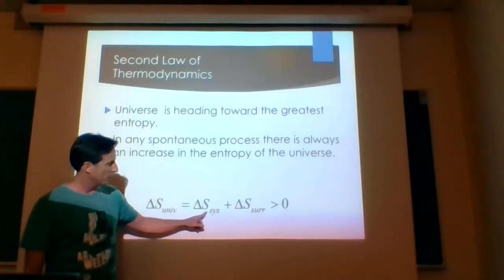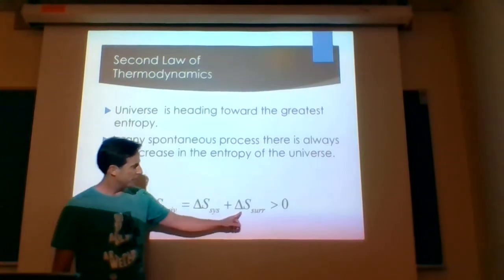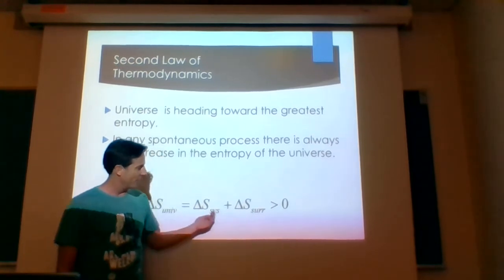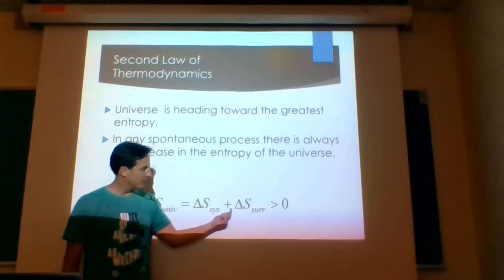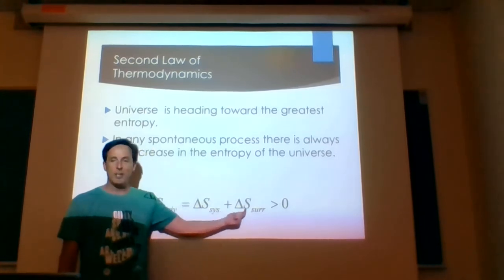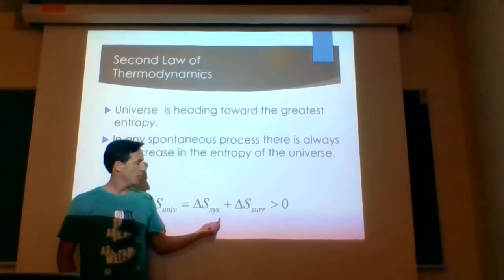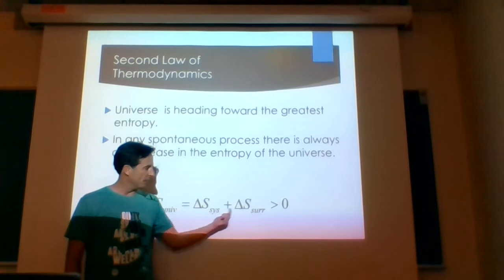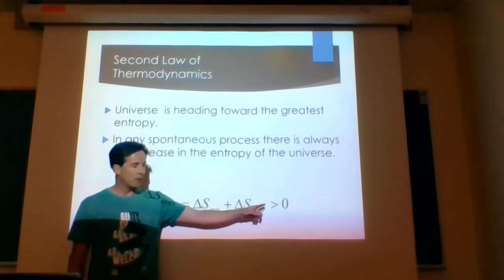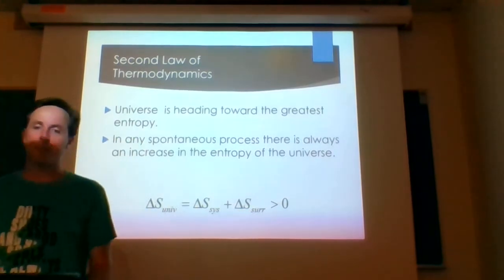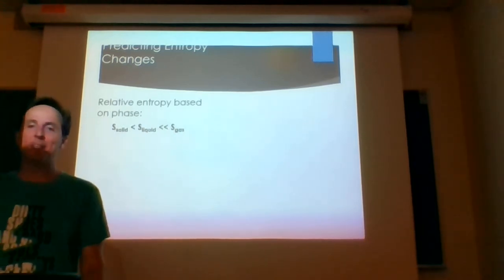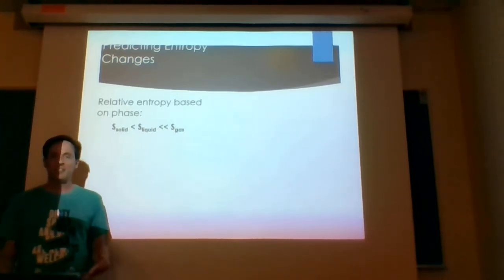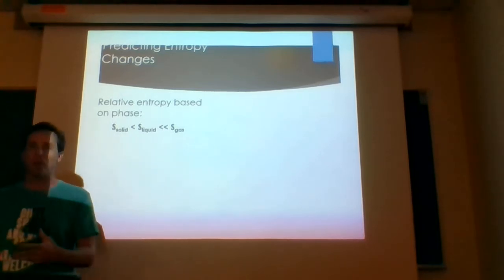So for everything you do, the entropy of the universe will always go up. The entropy change of the system plus the entropy change of the surroundings together make the entropy of the universe. No matter what you do, the sum of these two things will always be greater than zero, giving a positive delta S for the universe.